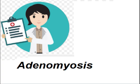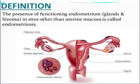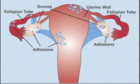Now, what is endometriosis? By definition, the presence of functioning endometrial glands and stroma in sites other than the uterine mucosa is called endometriosis. Endometrial glands and stroma can be present on the outer side of the fallopian tubes, on the outer side of the uterus, in the pouch of Douglas, or on the ovarian surface.